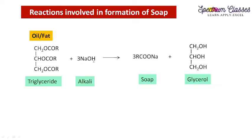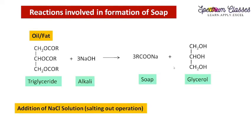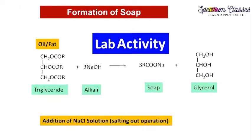For each acidic group we require one molecule of alkali. In this process we add NaCl solution to precipitate the soap. We add NaCl because the excess sodium ions increase the ionic product, and the soap gets precipitated due to the common ion effect of NaCl.